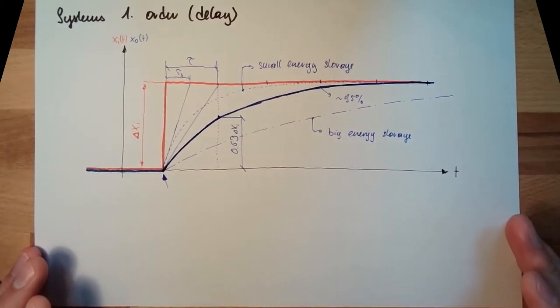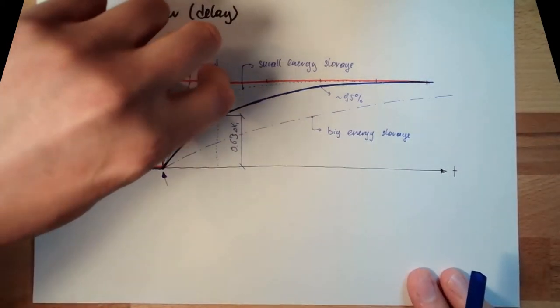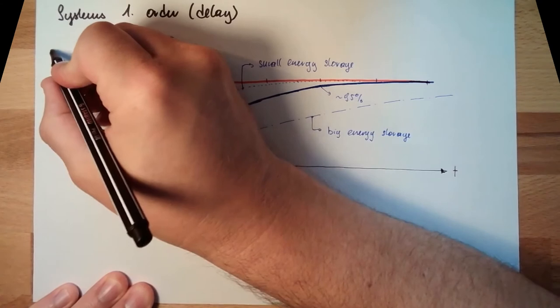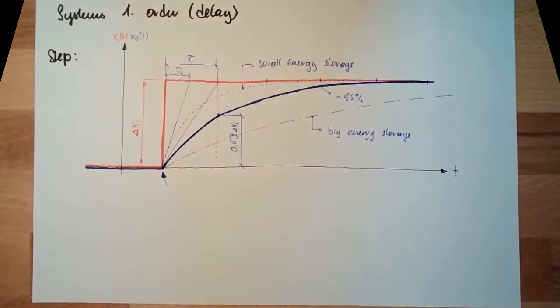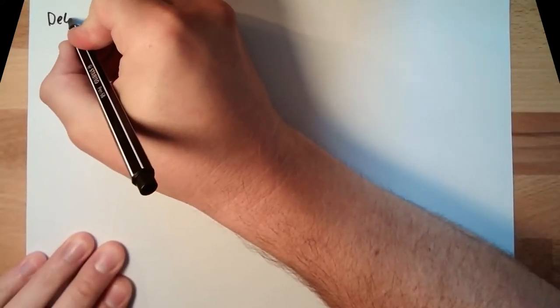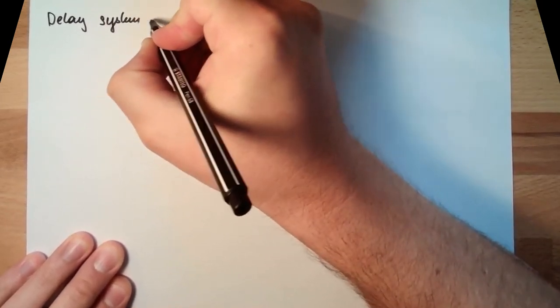If we have a system where the time constant is one second, it needs five seconds until we are there. We can talk about this step - the step test function. This is the first order step characteristic value: time constant - that's it.